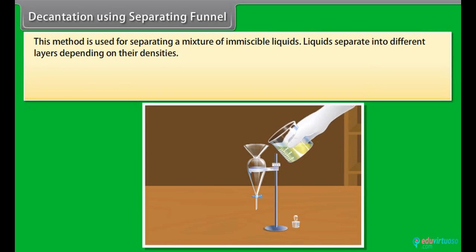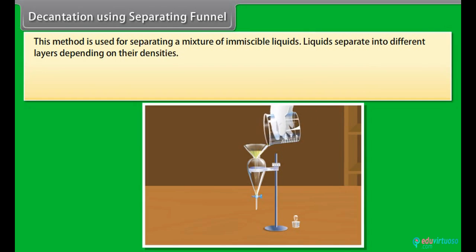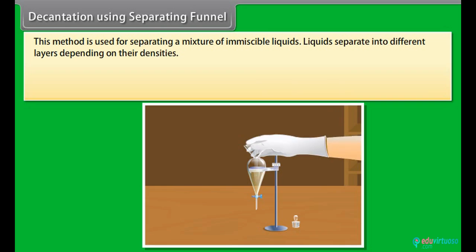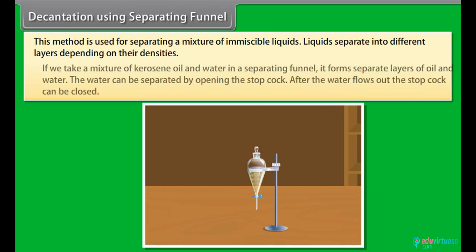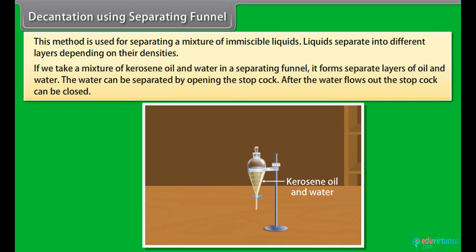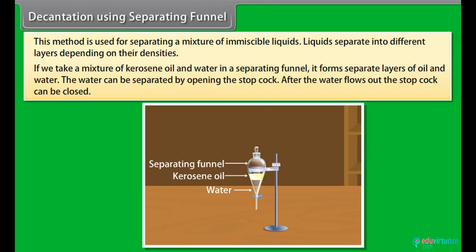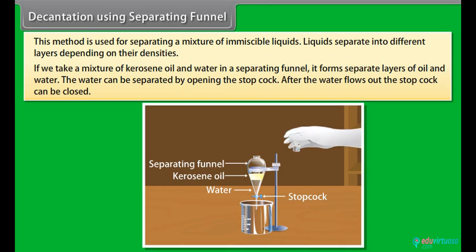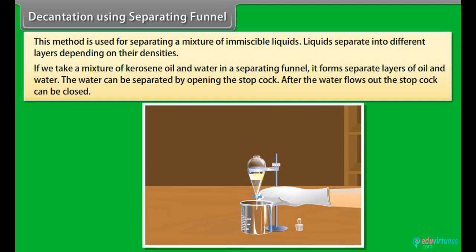Decantation using a separating funnel: This method is used for separating a mixture of immiscible liquids. Liquids separate into different layers depending on their densities. For example, a mixture of kerosene oil and water forms separate layers in a separating funnel. Water can be separated by opening the stopcock, and once the water flows out the stopcock is closed.